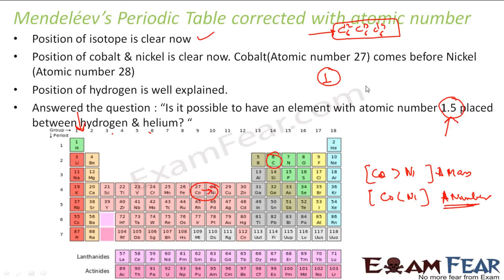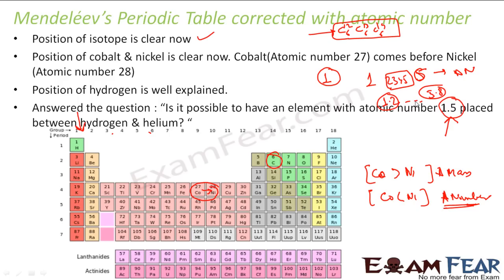For example, how many elements can exist between atomic numbers 1 and 6? The answer is 4 — atomic numbers 2, 3, 4, and 5. But if you are using atomic mass, say 1.2 and 5.8, you cannot tell how many elements lie between them because atomic masses are decimal numbers. Atomic number solves this problem. Using atomic number instead of atomic mass resolved so many issues.